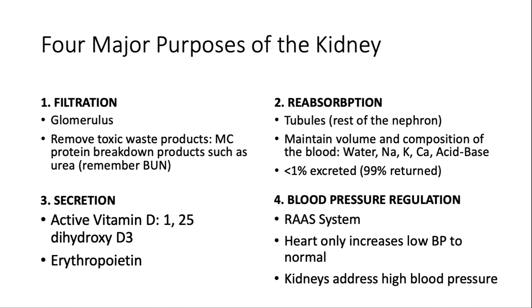Individuals with chronic kidney disease who have failure of this secreting mechanism won't produce erythropoietin, leading to anemias and difficulty creating new red blood cells. Number four is blood pressure regulation. The heart is in charge of only increasing low blood pressure to normal, but the kidneys control everything else.